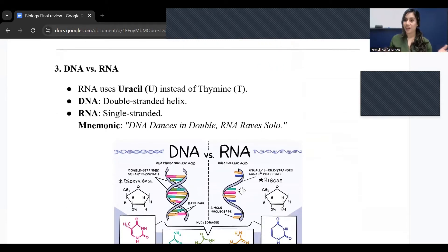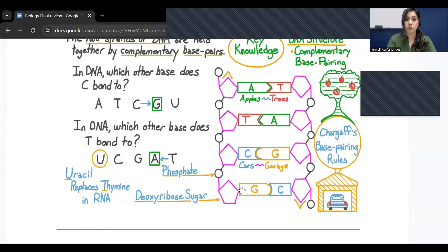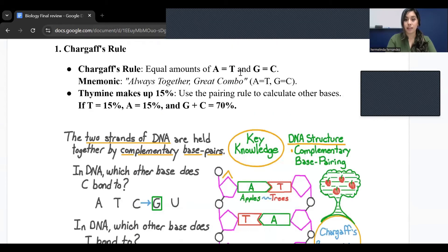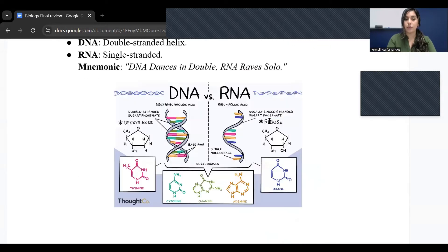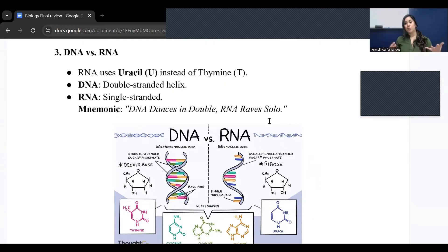Now we have DNA versus RNA. What I want you to remember is that RNA uses uracil instead of thymine. So going back to our bases, with RNA instead of thymine, it uses uracil. For RNA, instead of that thymine, it's going to have a U. One of the things to keep in mind is that DNA is that double-stranded helix and RNA is single-stranded. So DNA dances in doubles and RNA raves solo.